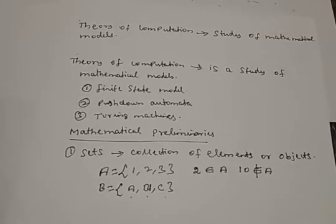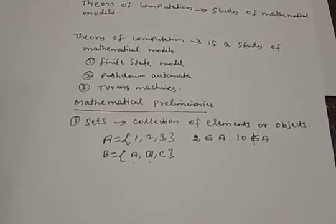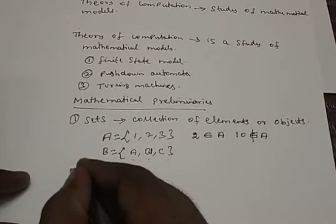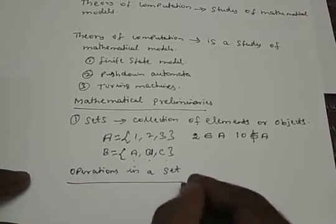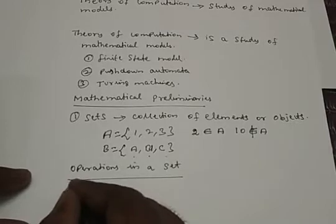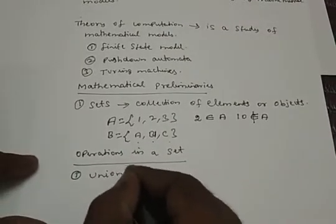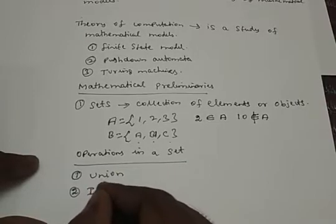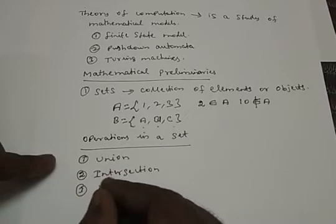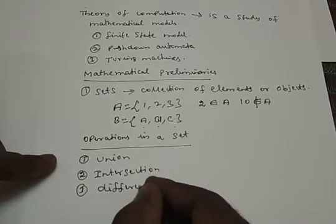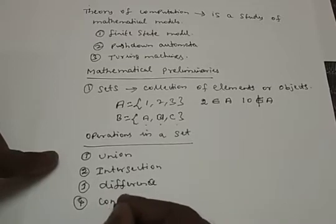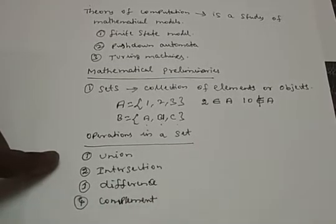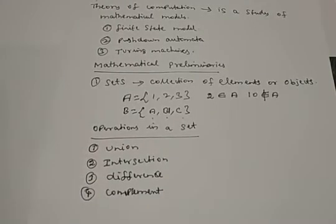A set is a collection of elements or objects. We will now discuss the various operations on a set: (1) Union, (2) Intersection, (3) Difference, and (4) Complement. These are the basic operations which can be performed on a set.